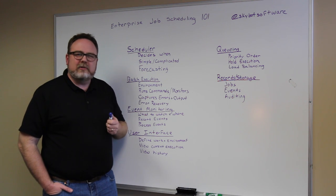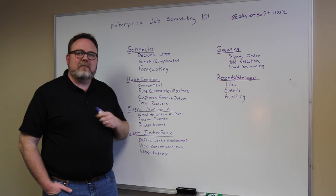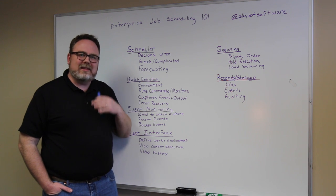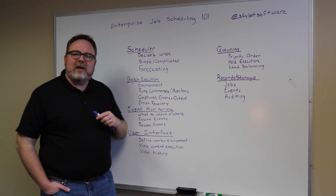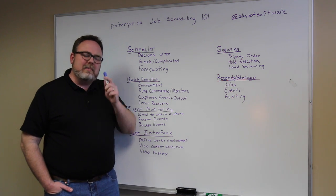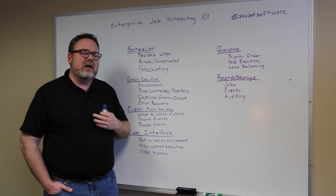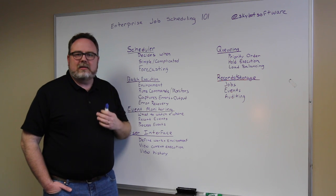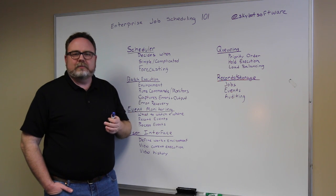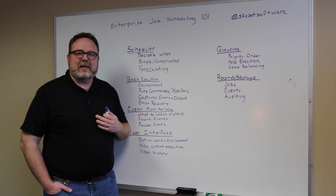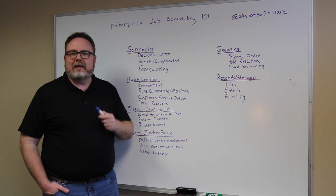That's really one of the reasons for using an enterprise job scheduler, because you can run things on remote systems all across your enterprise without having to actually log into those to see that output or see those errors. And then another important piece is automated error recovery. Automated error recovery is important from a standpoint of if you have a job that fails in a certain way — maybe a tape isn't loaded in a drive or maybe the network is down — then you're going to want to have it automatically recover and try it again, because you know that if it tries it again, it's just going to work.